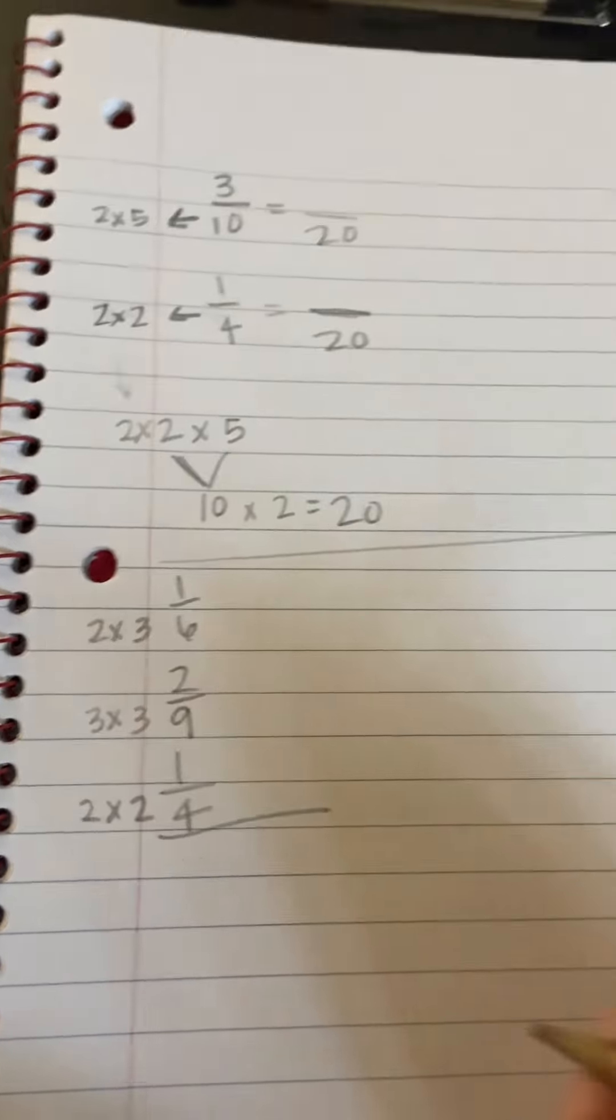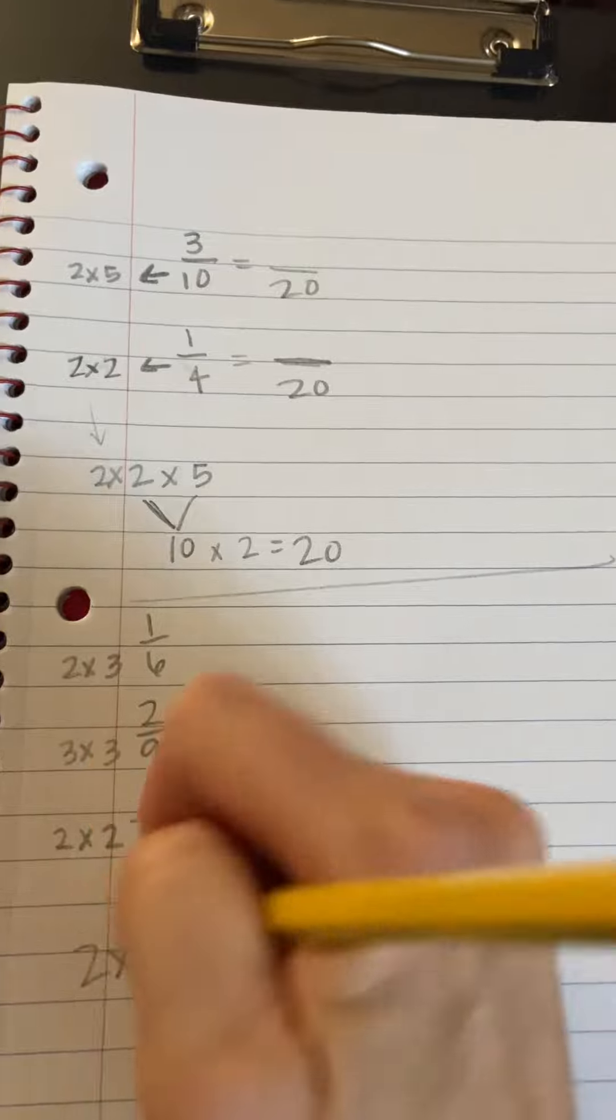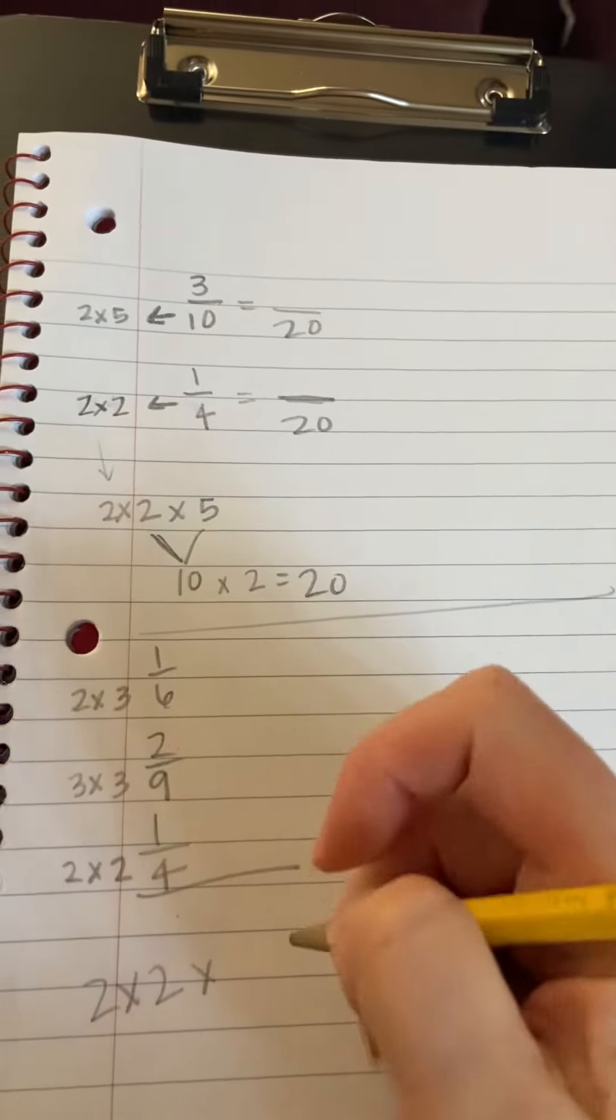Which number has more threes in it? The top, middle, or bottom? Middle. How many threes are there? One. Two.